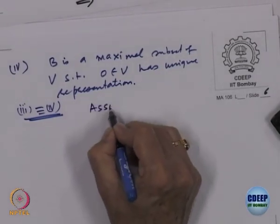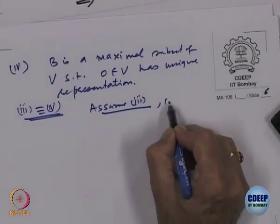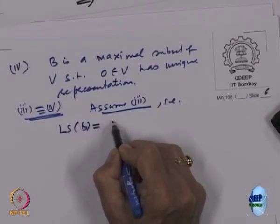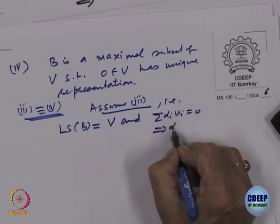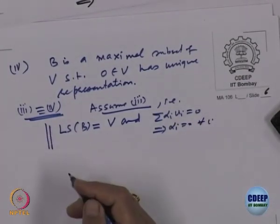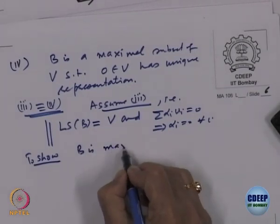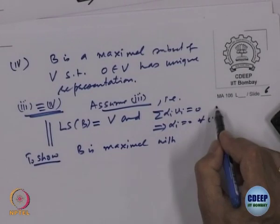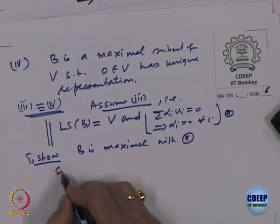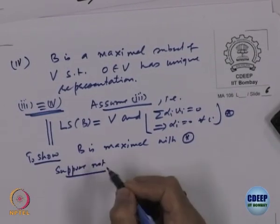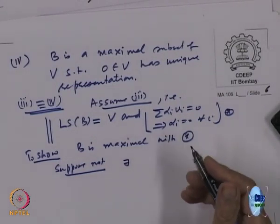Assume statement 3: the linear span of B equals V, and sigma alpha_i * V_i = 0 implies alpha_i = 0 for every i. What is to be shown is that B is maximal with property star — that is, 0 has a unique representation. Suppose not; suppose B is not maximal with property star.